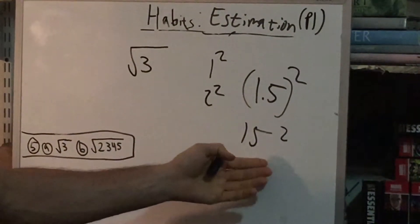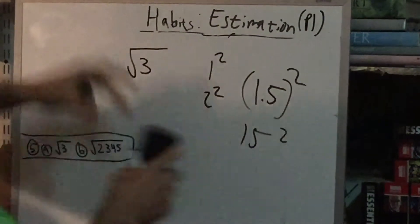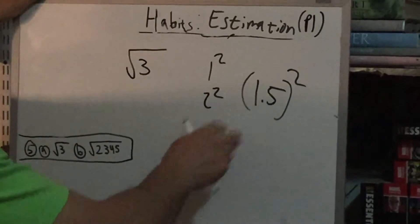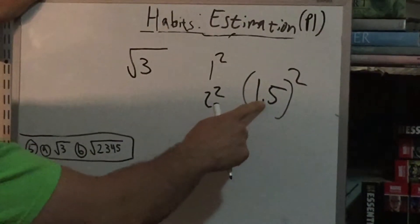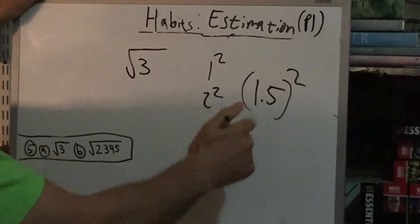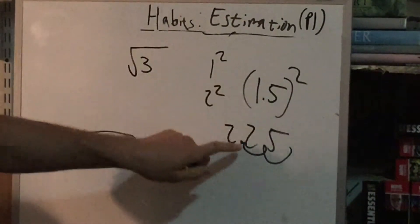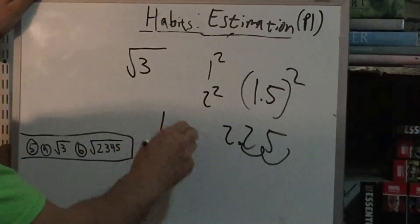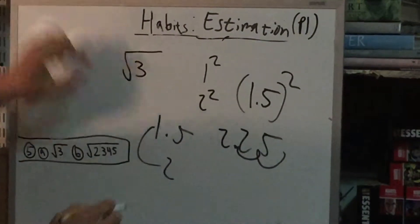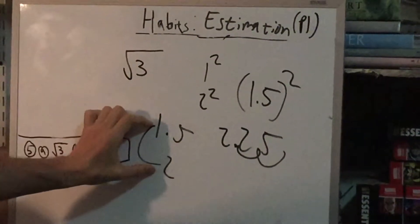Also, this is just a perfect square you should have memorized. So this is 225, but since each 1.5 has a decimal point, it will be 225 with 2 decimal points. So this is 2.25. So in this way, we've narrowed it down to be between 1.5 and 2.